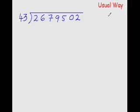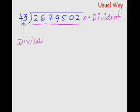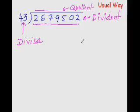Before we see the usual way to divide these numbers, let me warn you — the usual way to divide any number is very long, so please be patient. The entire number being divided is known as the dividend, the number doing the dividing is the divisor, the answer is the quotient, and any digit left at the end is the remainder.